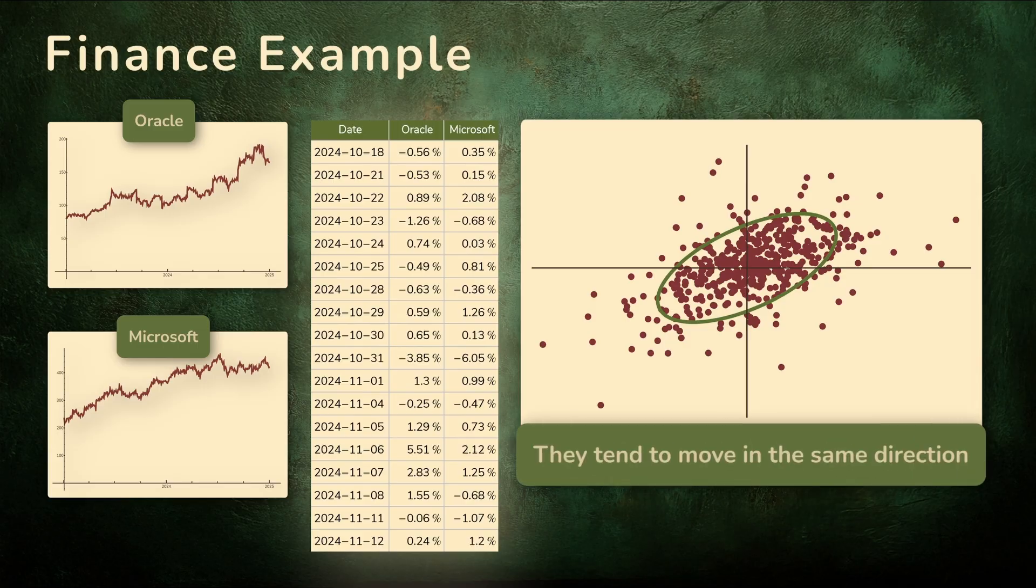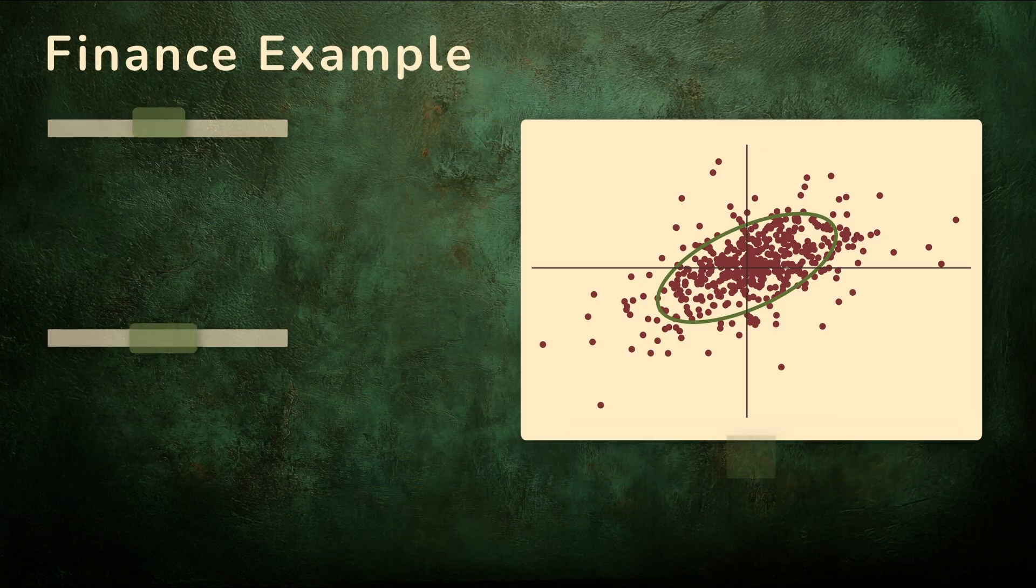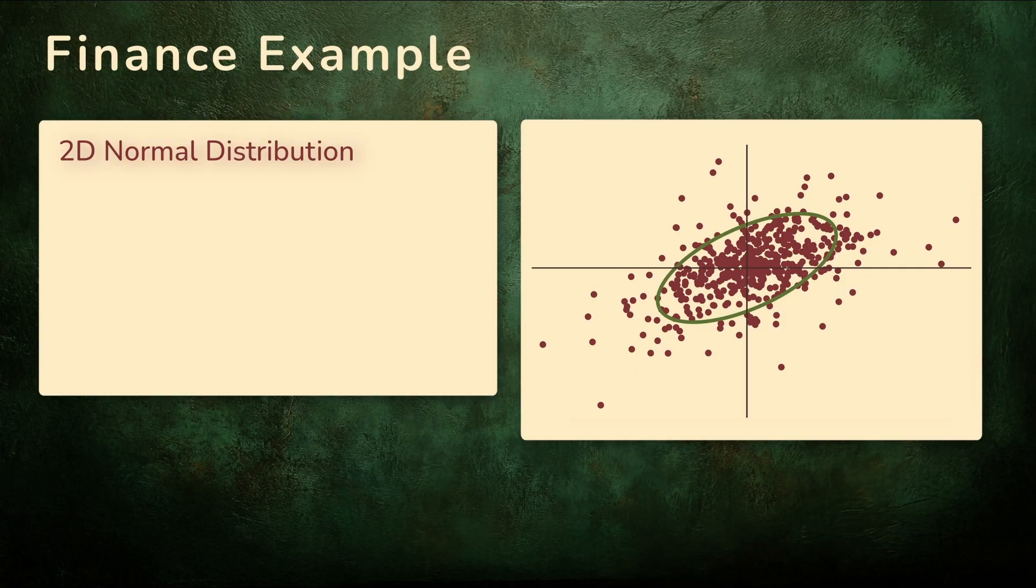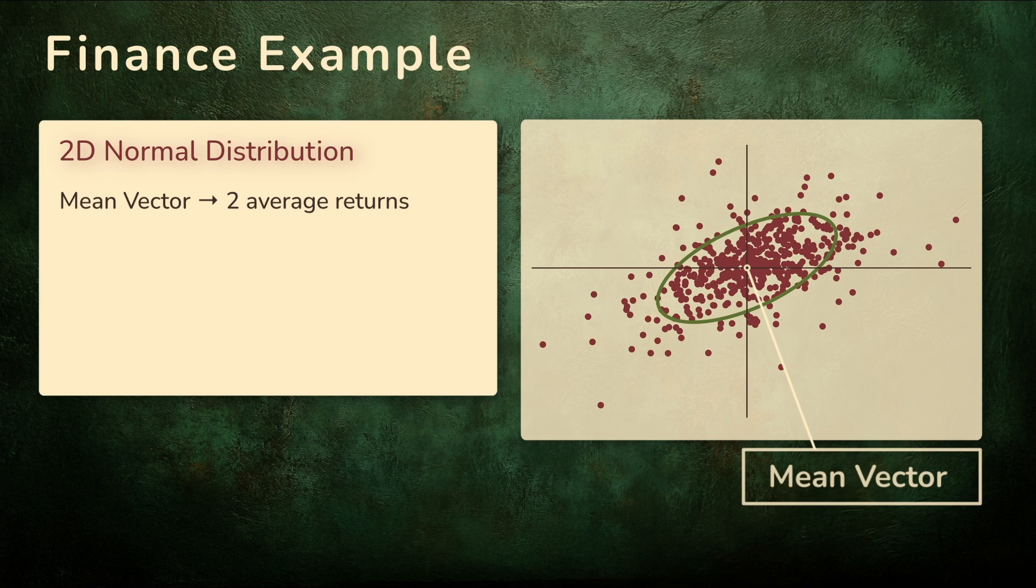When Microsoft has a good day, Oracle often does too. And the same goes for down days. Based on this shape, we see that we can model the relationship using a two-dimensional normal distribution. The center of that oval is the mean vector. Two numbers, the average daily return of Microsoft and the average daily return of Oracle.